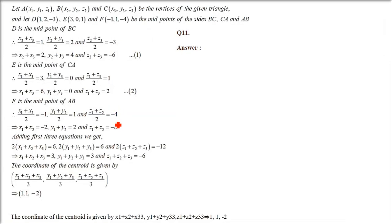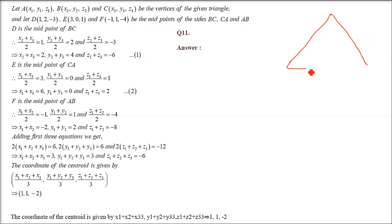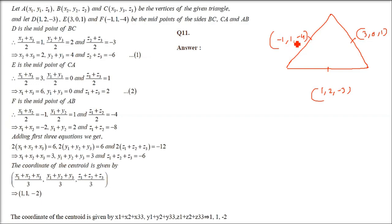Question number 11. Find the centroid of the triangle whose midpoints of sides are (1, 2, -3), (3, 0, 1), and (-1, 1, -4). This type of question we have already done — same concept. We name the vertices A, B, C and the midpoints D, E, F, where D is midpoint of BC, E of CA, and F of AB.